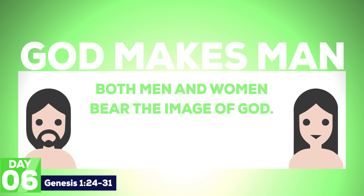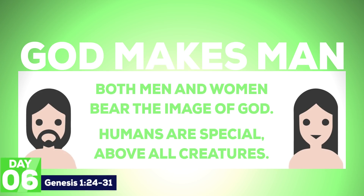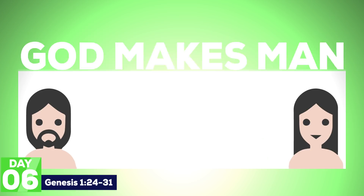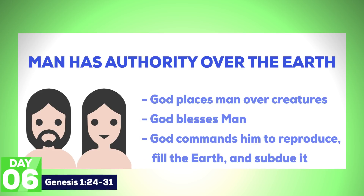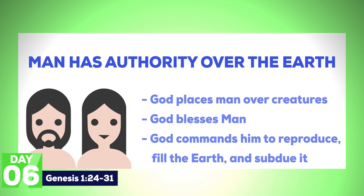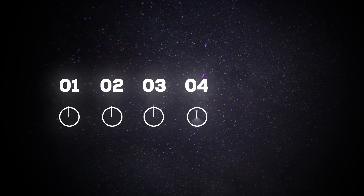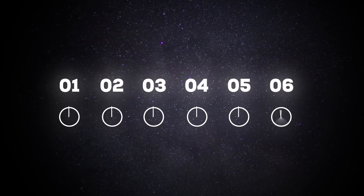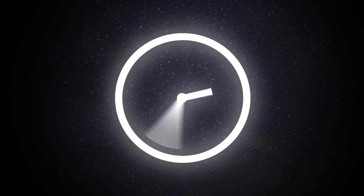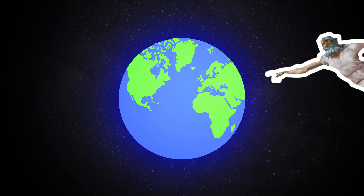God makes man, and man is made in the image of God and is special above all other creatures. To emphasize this, God places man in authority over the earth and over all other creatures. God blesses man and commands him to reproduce, fill the earth, and subdue it. The entire universe, in all of its beauty and perfection, was formed in six literal consecutive 24-hour days. At the completion of his creation, God announces that it is very good.